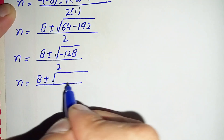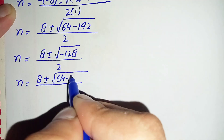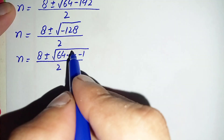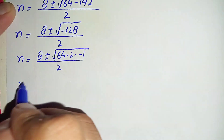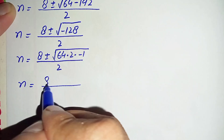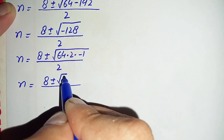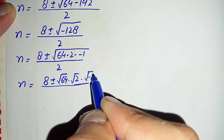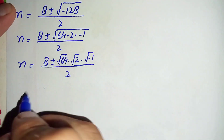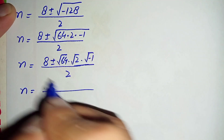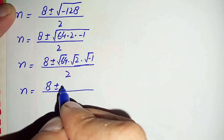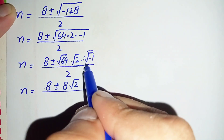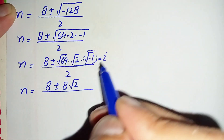We write negative 128 as 64 times 2 times negative 1, divided by 2. Splitting the square root over these three factors gives square root of 64 times square root of 2 times square root of negative 1, divided by 2. Using the complex identity, square root of negative 1 is equal to iota i.